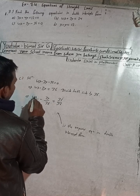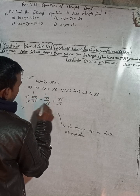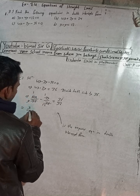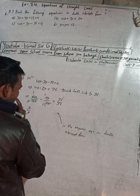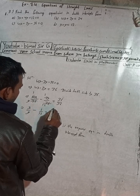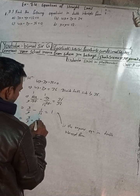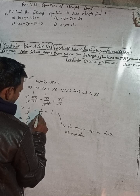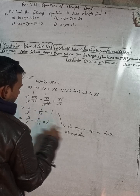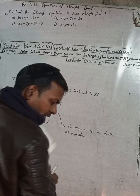Dividing both sides by 36: 4x/36 minus 3y/36 equals 36/36. Simplifying: 4 and 36 gives 9, and 3 and 36 gives 12. So we get x/9 minus y/12 equals 1. This is the required equation in double intercept form. You can write either form.